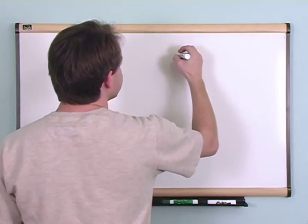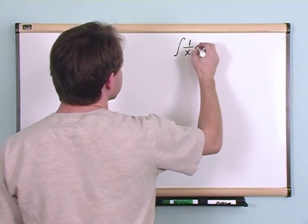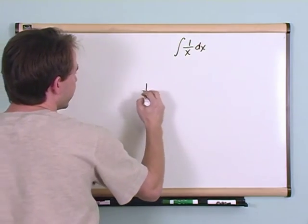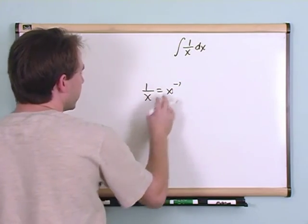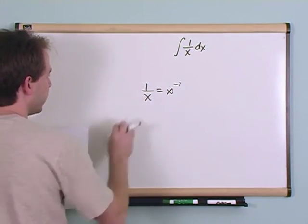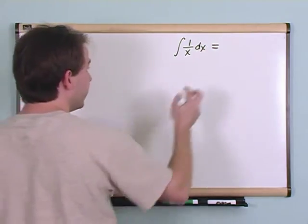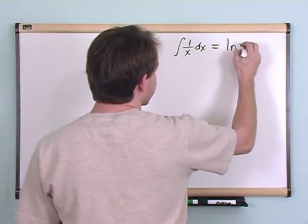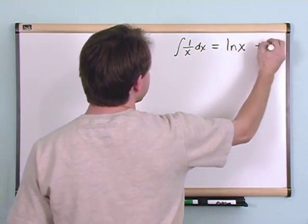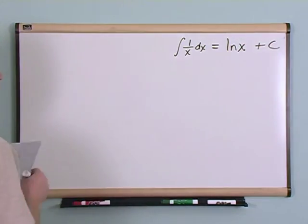The integral of 1 over x dx, and don't forget 1 over x is just simply x to the -1, the same problem we were just working a minute ago, is defined by definition to be the natural logarithm of x. And of course you have a constant just like you do for any derivative, I'm sorry for any integral.